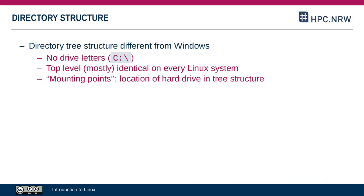The directory structure in Linux is a little different than what you're used to from Windows. From Windows you might be used to drive letters, where each drive is a different physical hard drive denoted by a letter. That's not how it works in Linux. In Linux it's all one big file tree. The top level of that file tree consists of a couple of directories which are identical on every Linux system and are standardized. Different physical hard drives are at different points in that tree, called mounting points.